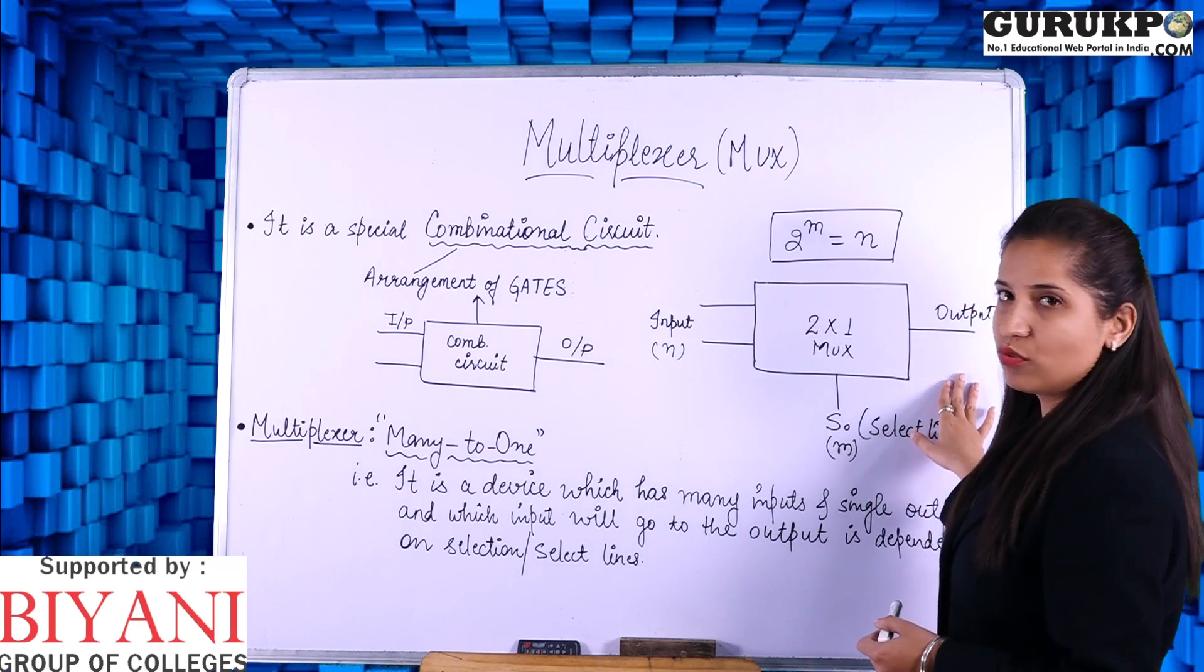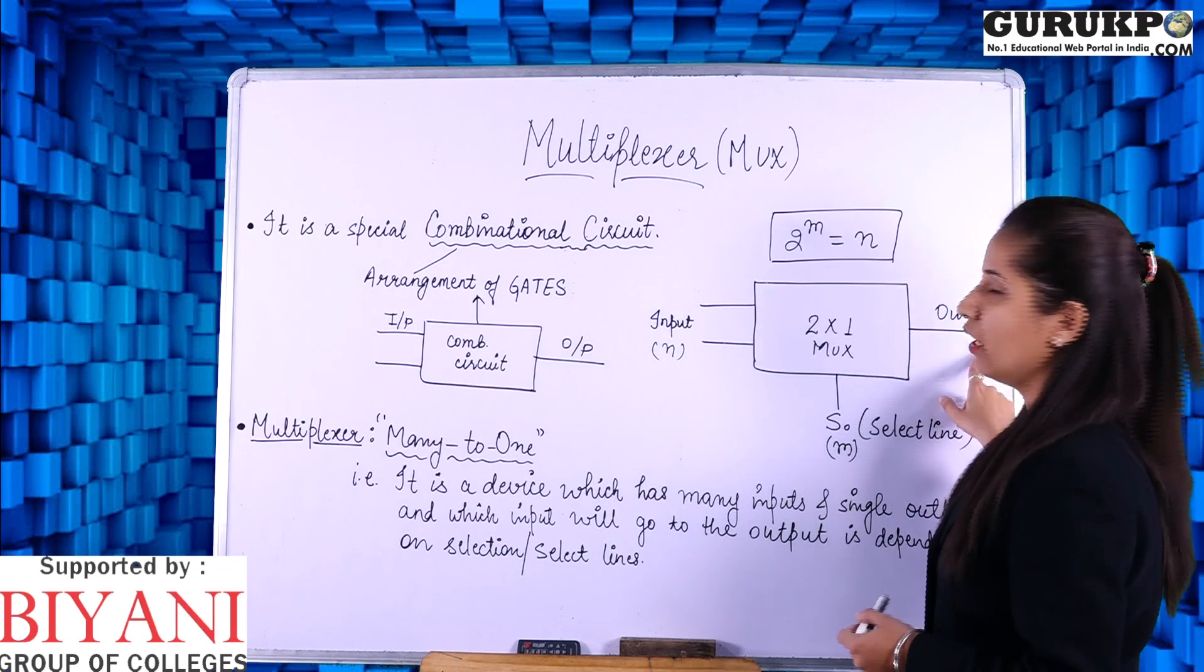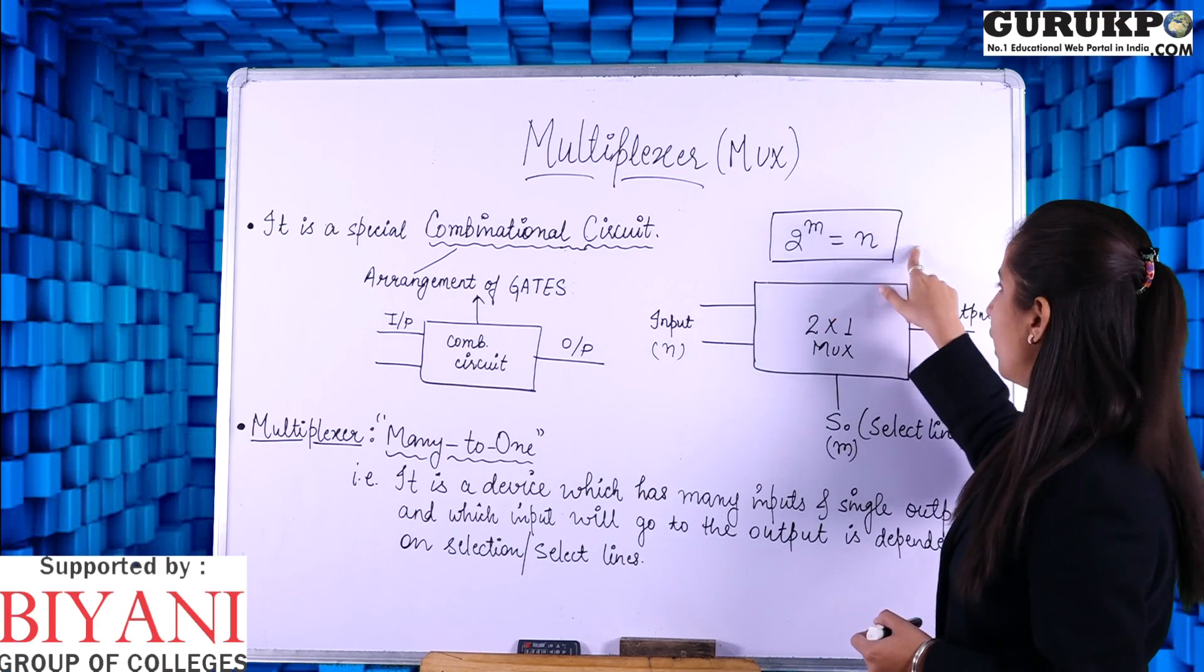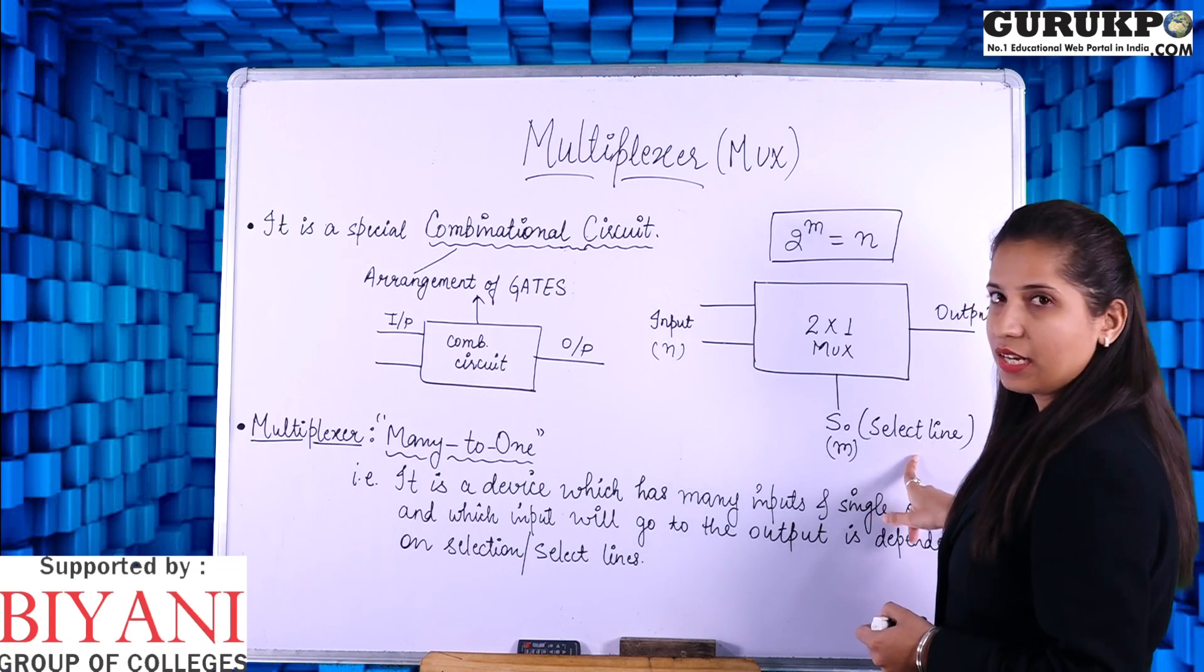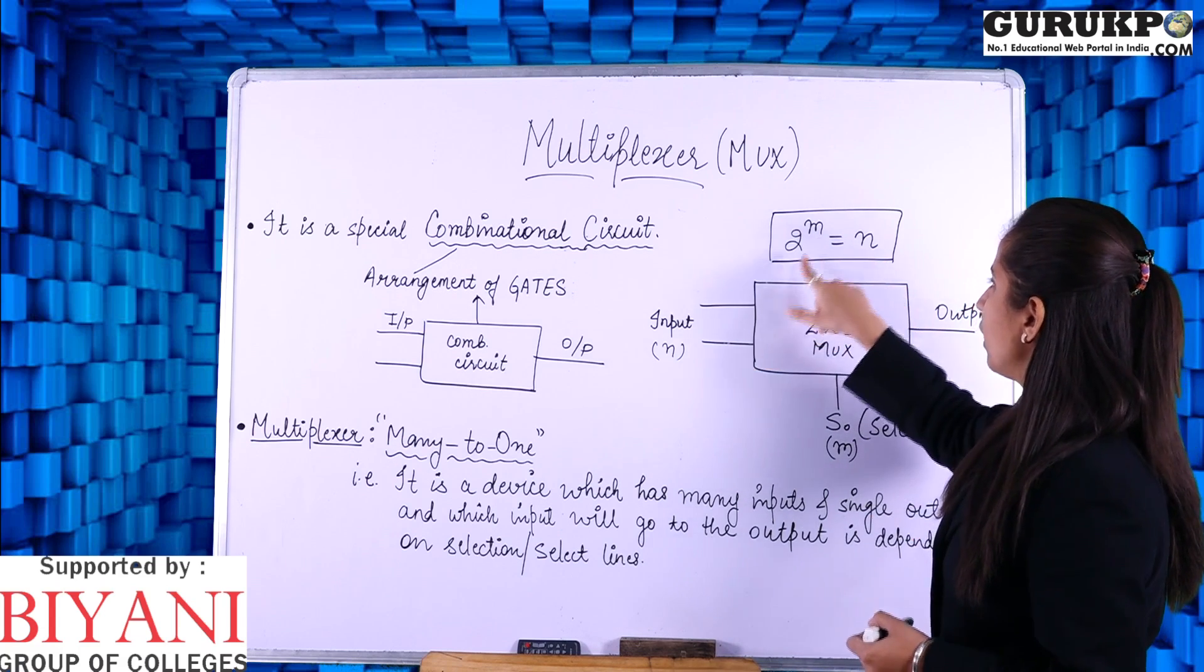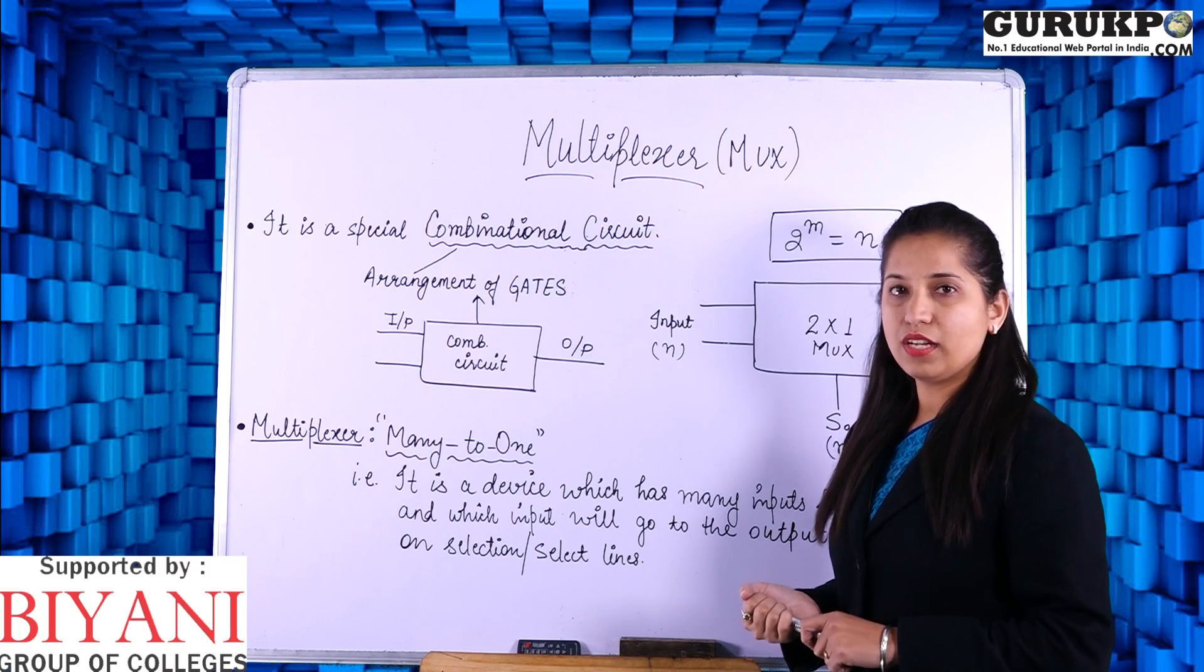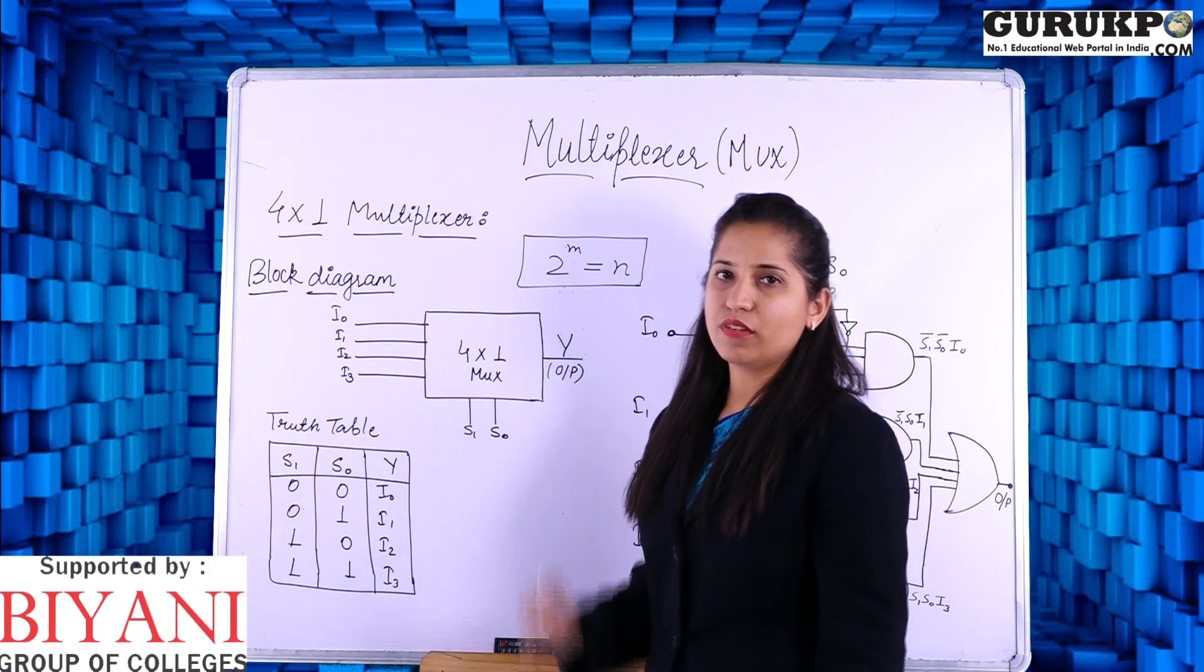Here I have an example of 2x1 MUX. In this we have 2 inputs and 1 output and number of selection lines can be detected by using the formula 2 to the power m equal to n. Here n is the number of input lines, m is the number of select lines. If we have 2 inputs then you will get 1 select line. By this way you can calculate 4x1, 8x1, 16x1 MUX. Next I am going to discuss 4x1 multiplexer.